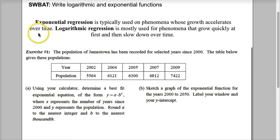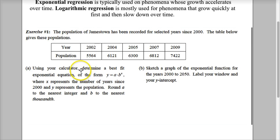First thing first, exponential function is typically used on a phenomenon whose growth accelerates, meaning it increases over time. While a logarithmic regression is mostly used for phenomena that grow quickly at first, then slow over time.